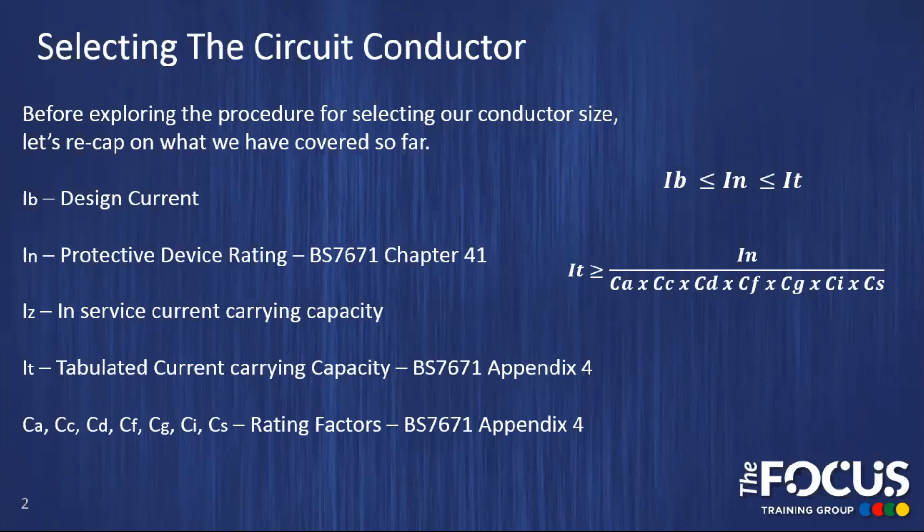First of all we looked at how we calculate IB, our design current, which is the amount of current or amps that our circuit or equipment will draw under normal circumstances. We then looked at selecting a protective device rating, IN, using the information from BS 7671 chapter 41, making sure that we chose a protective device rating that was either equal to or just above our design current, therefore not operating when our circuit is performing its normal duties.